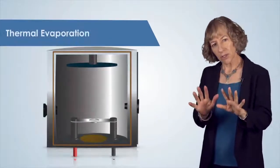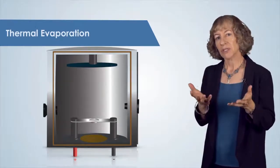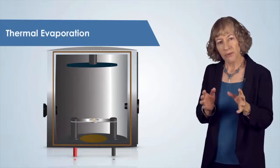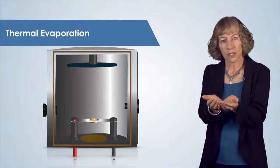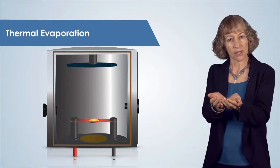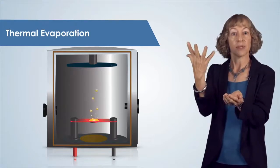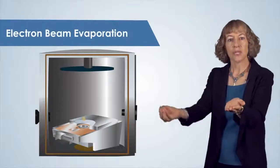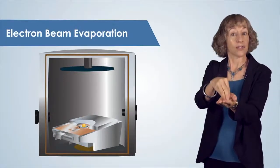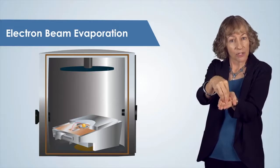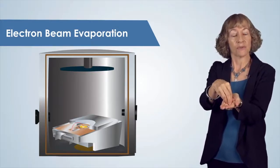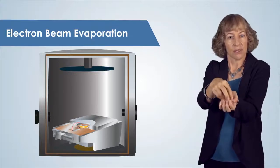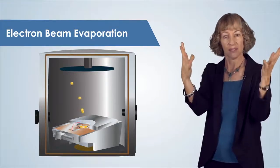This technique is similar to thermal evaporation, but the material is heated up a little bit differently. In thermal evaporation, electrical current is used to heat a boat so that the source material in the boat melts and evaporates. In electron beam evaporation, a stream of electrons, or an electron beam, is aimed at the high purity source material that we want to evaporate. This beam of electrons heats the material to its melting point and then evaporates the source material.